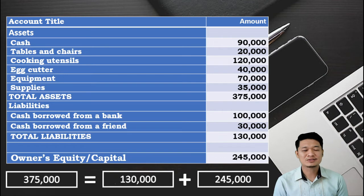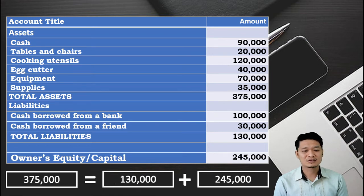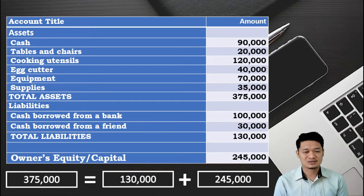Now, let's check your answers. For assets we have: cash, 90,000 pesos; tables and chairs, 20,000 pesos; cooking utensils, 120,000 pesos; egg cutter, 40,000 pesos; equipment, 70,000 pesos; supplies, 35,000 pesos. Total assets: 375,000 pesos. Liabilities: cash borrowed from bank, 100,000 pesos; cash borrowed from a friend, 30,000 pesos. Total liabilities: 130,000 pesos. Applying the accounting equation, assets less liabilities equals owner's equity, amounting to 245,000 pesos.